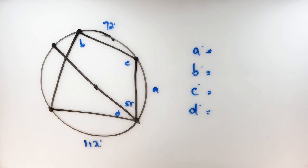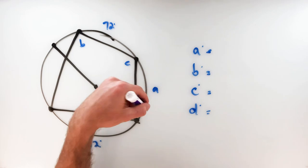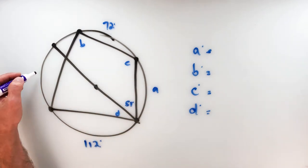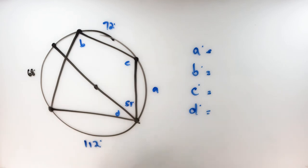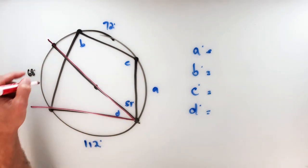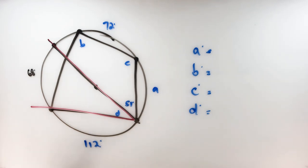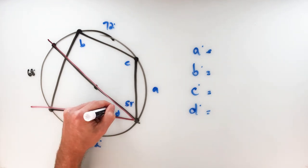Starting with the diameter: it cuts the circle into 180 degrees on each side. I've already got 112 on one side, so 180 minus 112 gives me a 68 degree arc. That's not one of my variables, but angle D is an inscribed angle that intercepts that 68 degree arc. So the measure of inscribed angle D is half of 68, which is 34 degrees.